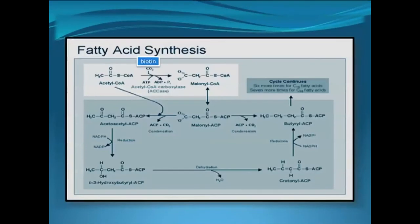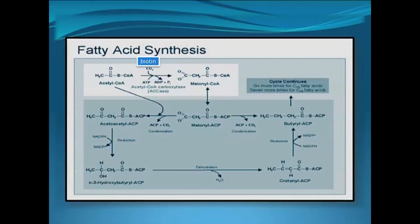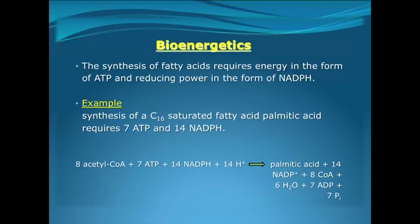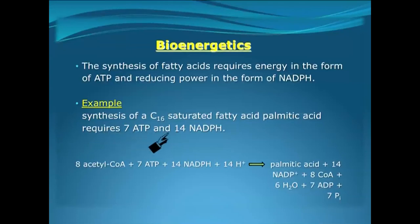One key important intermediate of this biosynthesis pathway is malonyl-CoA, and during these reactions the substrates remain bound to a low molecular weight conjugated protein called the acyl carrier protein or ACP. As shown in this slide, acetyl-CoA undergoes a condensation reaction with carbon dioxide and ATP in the presence of biotin to yield malonyl-CoA. This malonyl-CoA accepts ACP and gets converted to malonyl-ACP, which is then converted to butyryl-ACP and the other steps continue — six more steps for C16 fatty acids and seven more steps for C18 fatty acids.